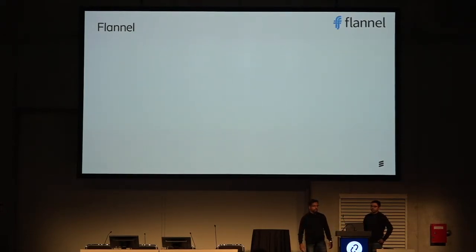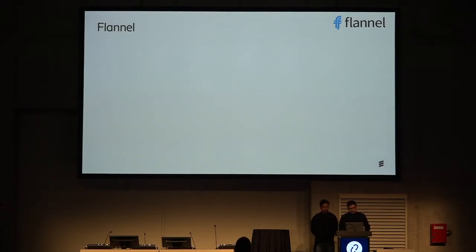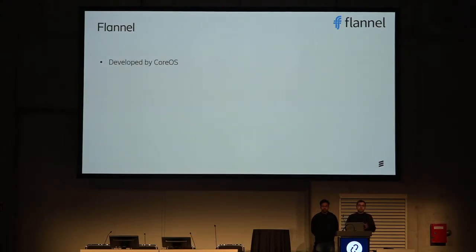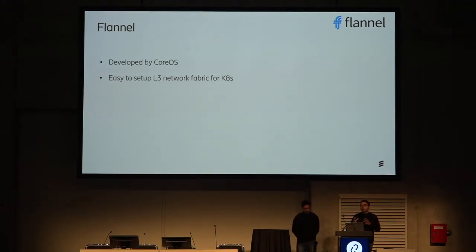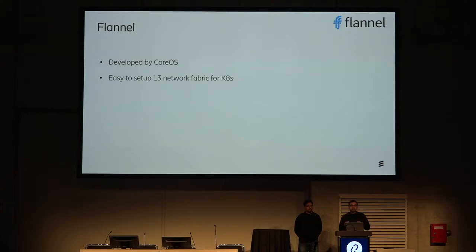To start off with the first fabric, let's talk about Flannel. Flannel was developed by CoreOS for the purpose of networking within Kubernetes, but it can also be used as a general SDN solution. It's fairly easy to set up an L3 network fabric for Kubernetes using Flannel. The idea is to create an overlay network over your host network, and pods belong to this overlay network, with packets routed within the Flannel network created by its daemon process.